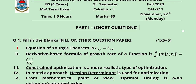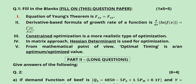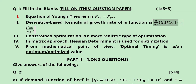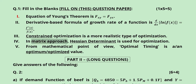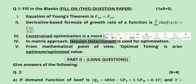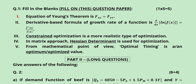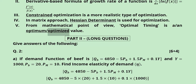So this is the solution of this question paper. The first blank pertains to the equation of Young's theorem. The other blank is to be filled with the derivative-based formula of growth rate of a function, which is the natural logarithmic derivative of a given function — that is the derivative over the function. The more realistic type of optimization is constrained optimization, and when we refer to the matrix approach, it is the Hessian determinant that we use. The mathematical point of view of optimal timing is that it is the optimized value, which is the objective of our optimization process. This was the solution of the objective part.